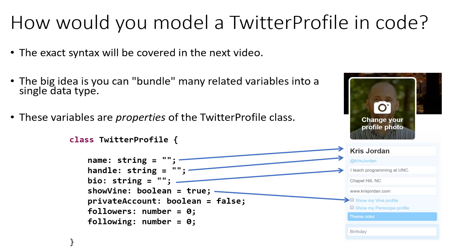So how would we actually model one of these Twitter profiles in code? We'll talk about the exact syntax in the next video, but the big idea is that we're going to be able to bundle many related variables into a single data type — and this is what we call a composite data type. If you look at the class TwitterProfile at the bottom, you can see that it looks like they're all variable declarations, but because we're declaring them inside the body of a class, we don't have to use the let keyword to do so. We call these properties of the TwitterProfile class, and they correspond logically with the fields you'd expect when editing a Twitter profile: your name, your handle, your bio, and so on. We can see that properties can be of type string, boolean, and number, and later we'll see that properties can also be classes or arrays.